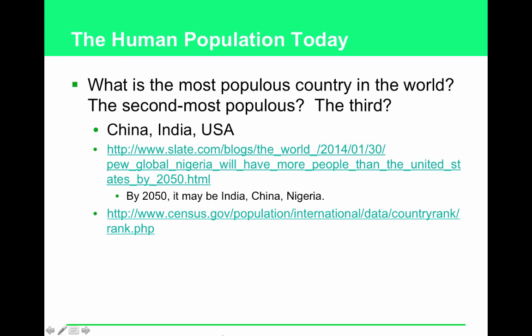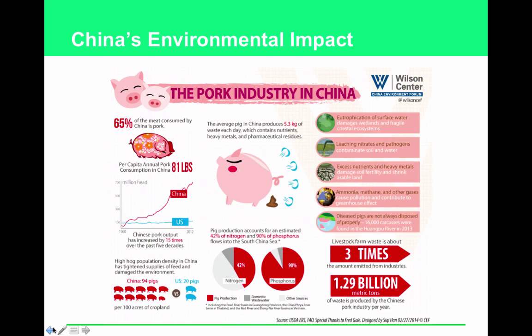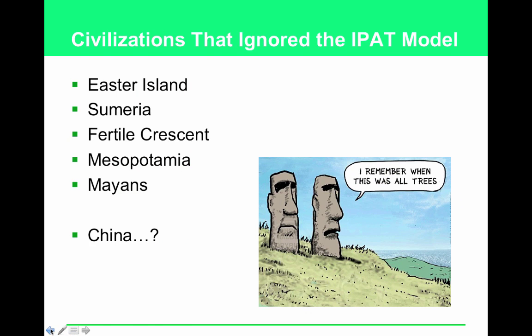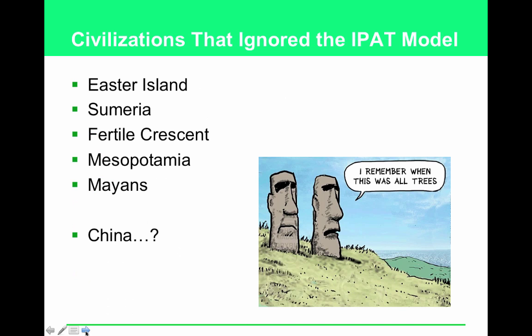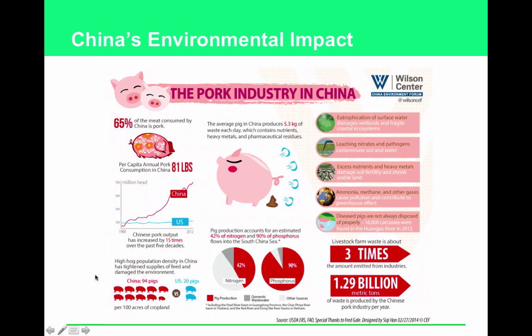Which part of the IPAT model impacts our use of NPP? All parts impact net primary productivity. It's also important to note that one country's affluence and desire for goods and services can impact another country, even when that country's people are not the driving force for the resource use. Stuff like cash crops and harvesting exotic woods — people who live there couldn't care less — still causes degradation in the original country.